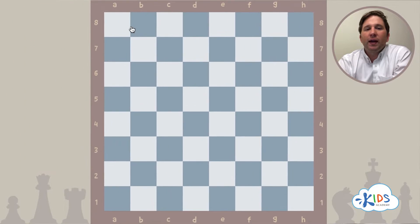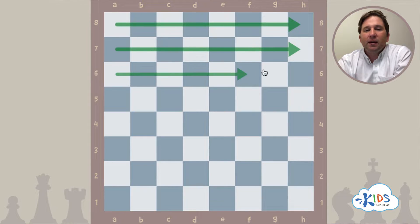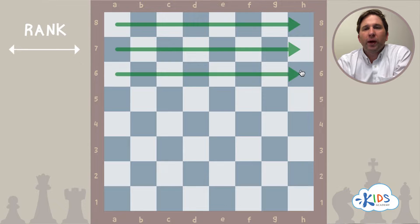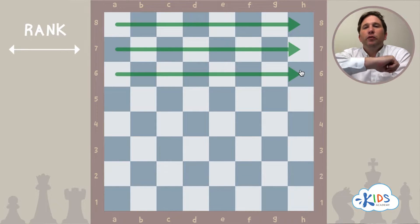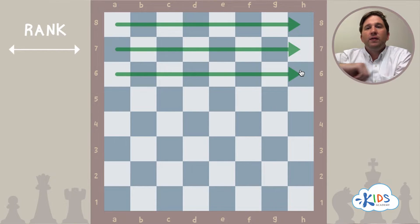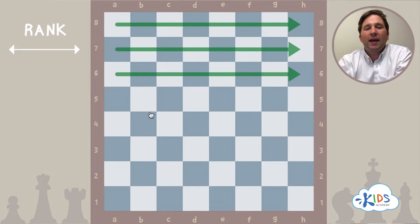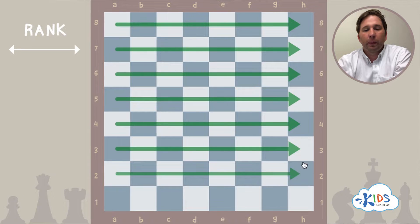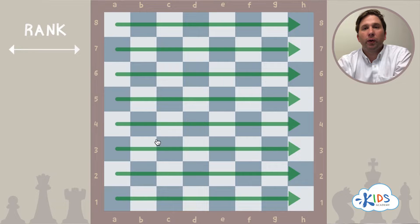The first word we're going to learn today means side to side. Instead of saying rows, in chess we use the word rank. Can you say the word rank for me? Rank. Now say rank and move your arms side to side. This is side to side and on the chess board there are eight ranks moving across the board. Rank is our word for row.